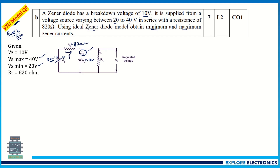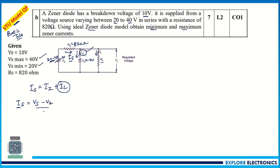Let the current flowing through the circuit be IS. We know that IS, the current flowing through resistor RS, equals the zener current IZ plus the load current IL. Another way to find IS is: IS = (VS − VZ) / RS. This expression gives us IS, but we have different values of VS — maximum and minimum.